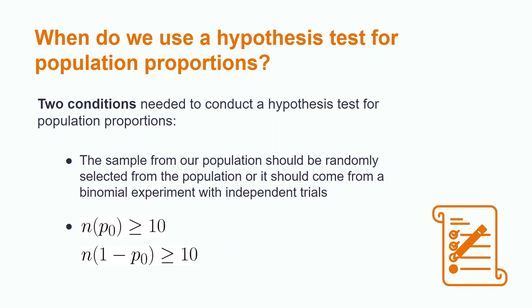The first condition states that the sample from our population should be randomly selected from the population, or it should come from a binomial experiment with independent trials. The second condition states that the sample size times the hypothesized proportion, as well as the sample size times 1 minus the hypothesized proportion, should both be at least 10.